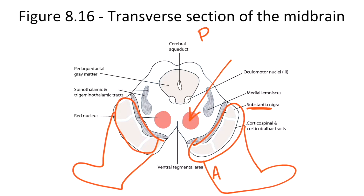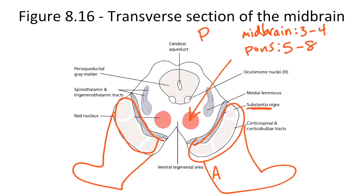Let's look at the cranial nerve nuclei in the midbrain. Many nuclei span large segments, but as a general rule the nucleus can be found wherever the peripheral branch emanates from the brain stem. Cranial nerves 3 and 4 emanate from the midbrain, so their nuclei are there. Cranial nerves 5 through 8 emanate from the pons, so their nuclei are in the pons. Cranial nerves 9 through 12 emanate from the medulla, so their nuclei are in the medulla.